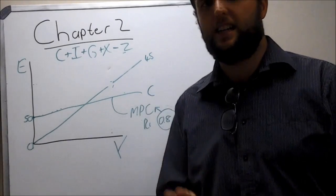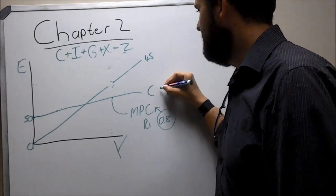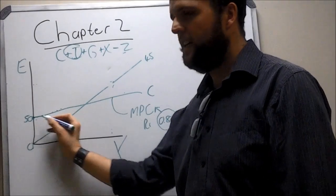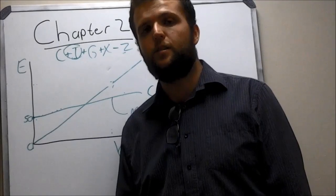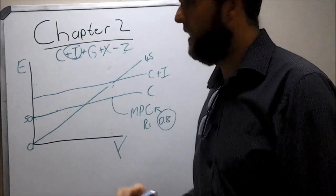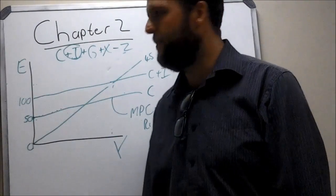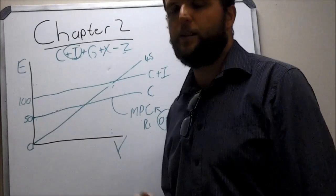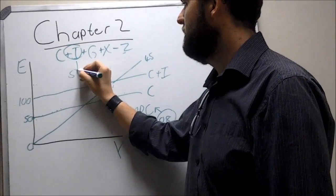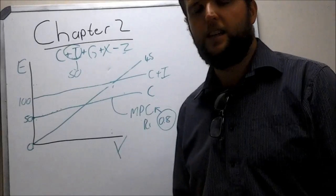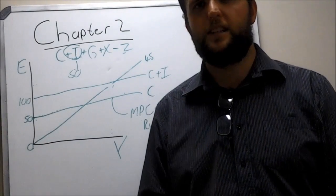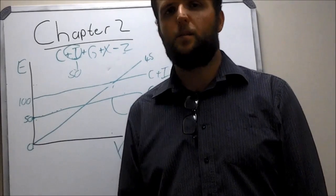Now let's take the two-sector model by adding investment. Investment is a positive addition to expenditure, so your line shifts upward from C to C plus I — say from 50 to 100. The investment is therefore 50, the difference between the two. Investment is independent of income, so all investment is autonomous. The only variable that can influence investment is the interest rate; there's a negative relationship between interest rates and investment, but we'll cover that in chapter 3.